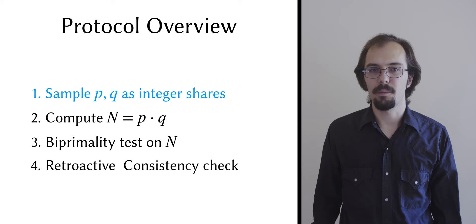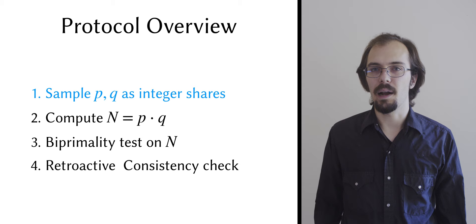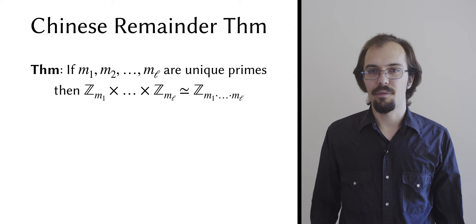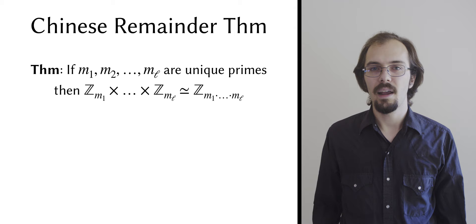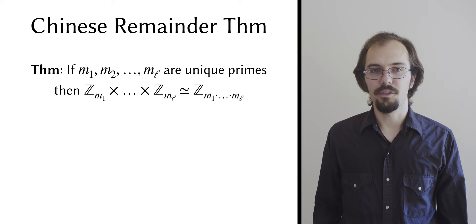If we have a vector of the first L unique primes, which we'll call a primordial vector, here represented by the letter M, and we have the product of those primes, which is the Lth primordial number, then the Chinese remainder theorem says that there is an isomorphism between the product of fields modulo the individual primes and the ring modulo the corresponding primordial number.